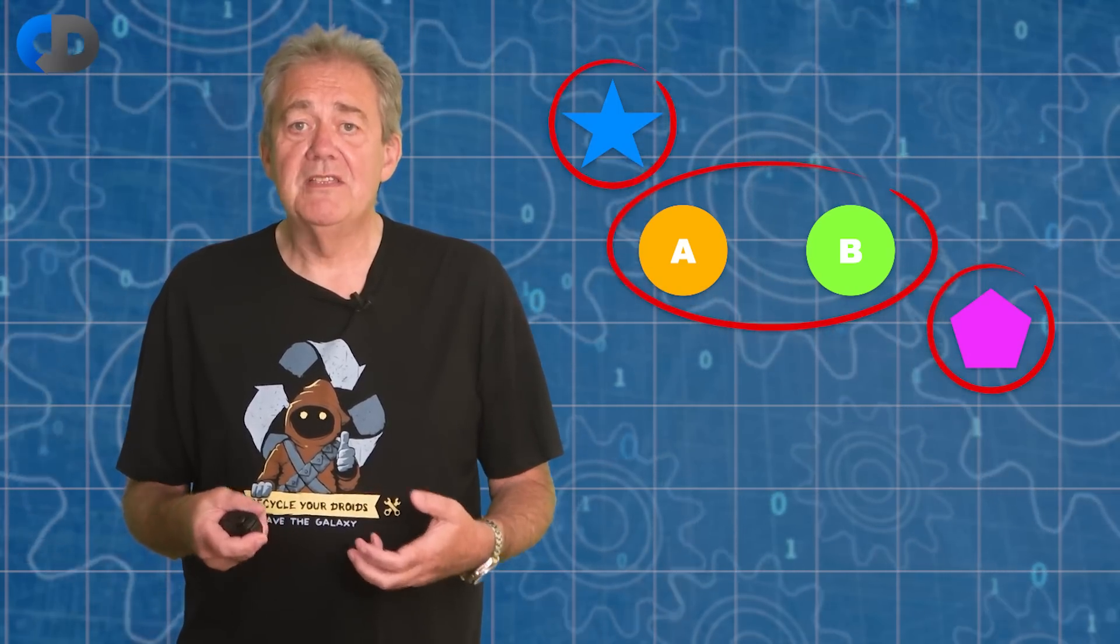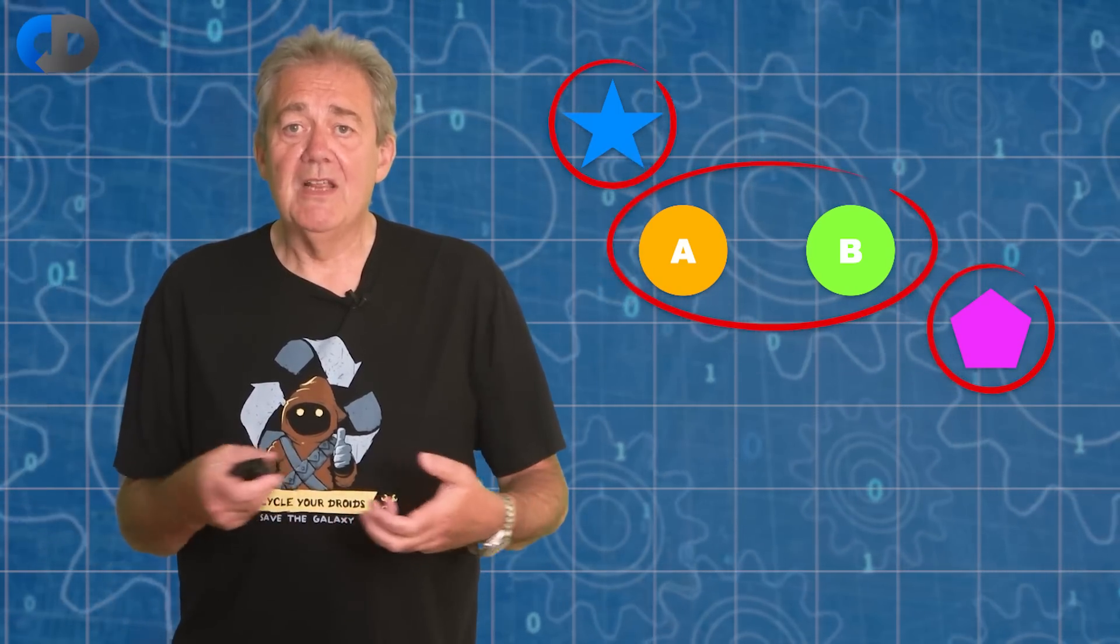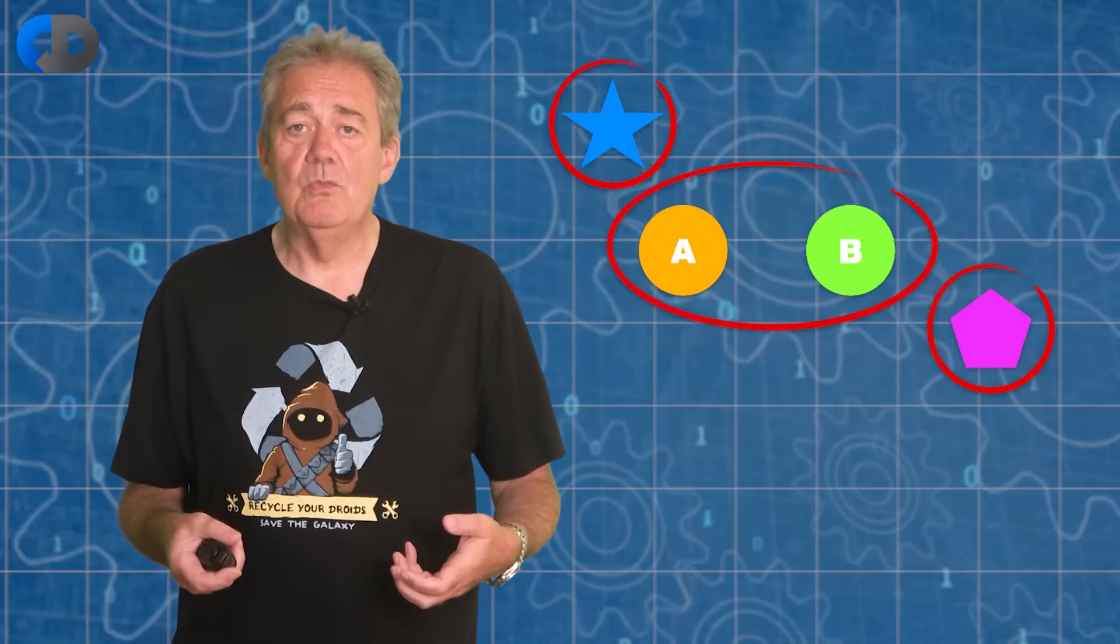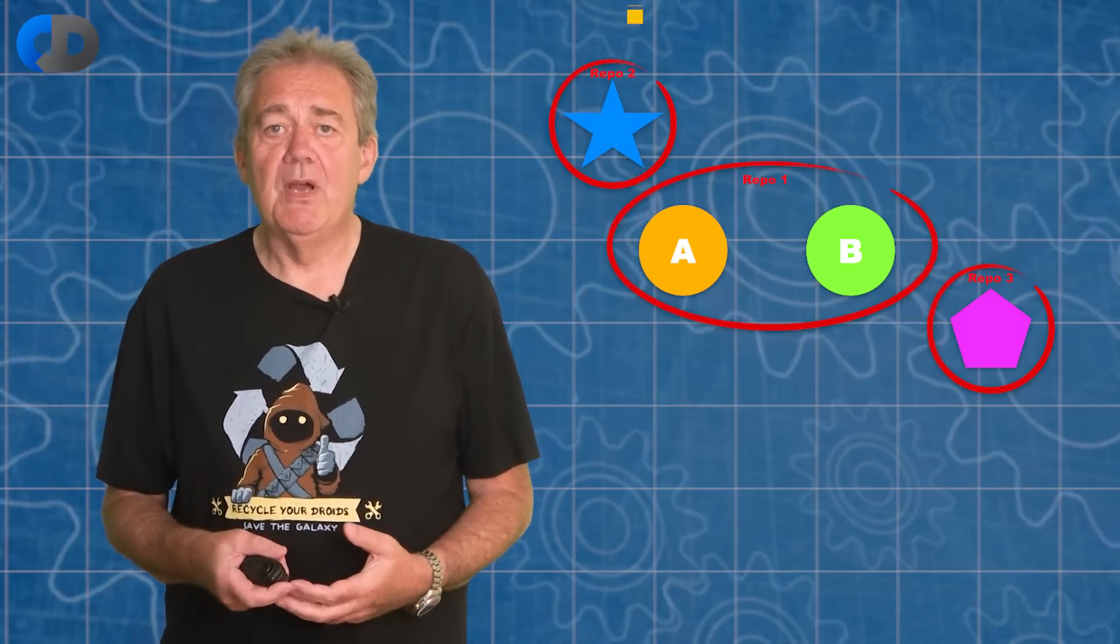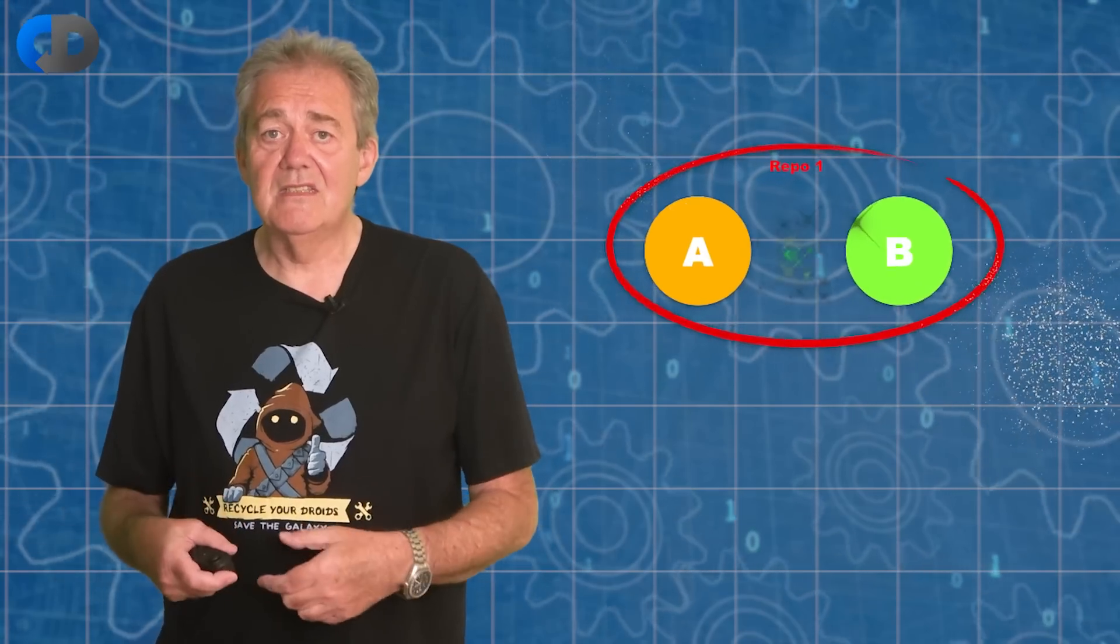Confirming that the things do in fact work together. If we put service A and service B into the same repo we are saying that the repo defines a sensible scope of evaluation that we're willing to defend in some way.